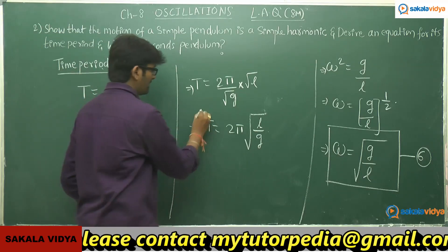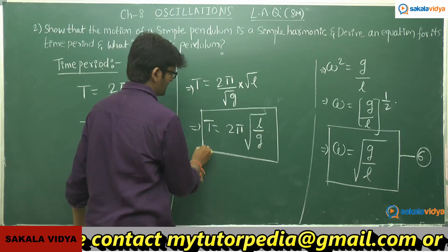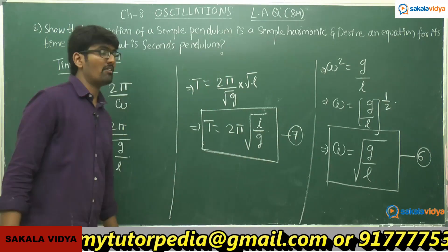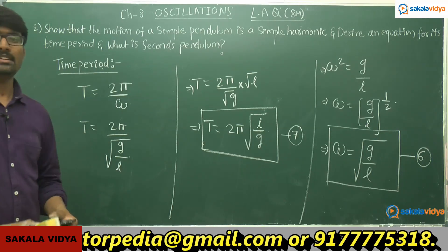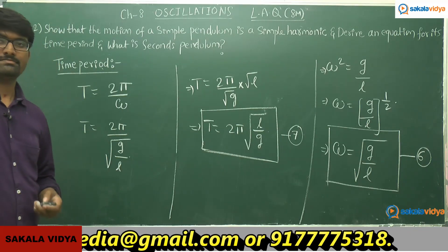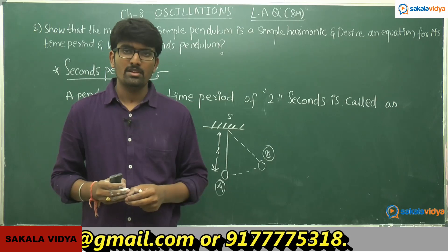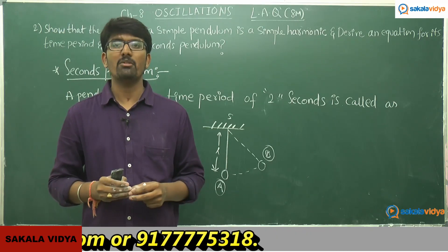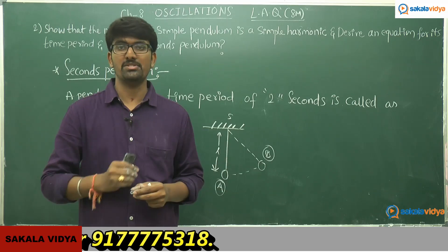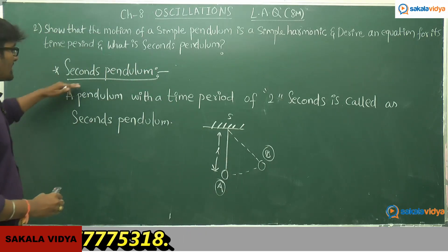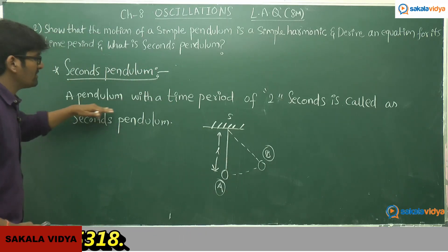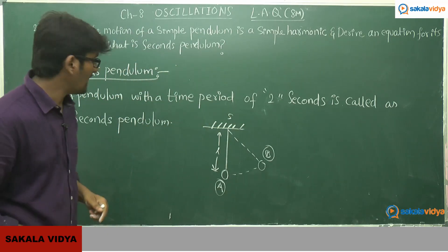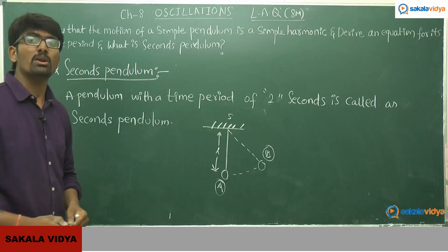This is the time period formula for a simple pendulum: T = 2π√(L/g) (equation 7). A seconds pendulum is a pendulum whose time period is 2 seconds. Such a pendulum is called a seconds pendulum.